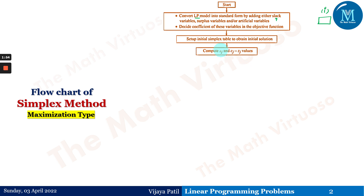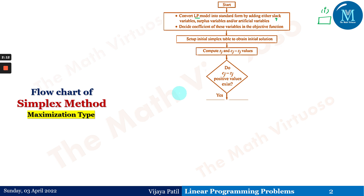After setting up the initial solution, we have to compute Zj and then Cj minus Zj values. I'll be explaining exactly what Cj means in detail when we go ahead with problems based on the simplex method. But first, I'd like to go through the flowchart so you understand what you need to reach the destination. Then we have to take a decision: do any Cj minus Zj positive values exist? If there are none, this is the optimal solution.